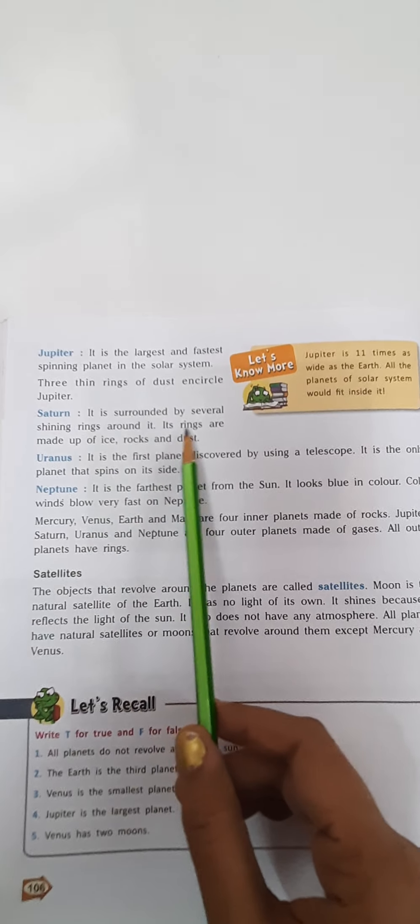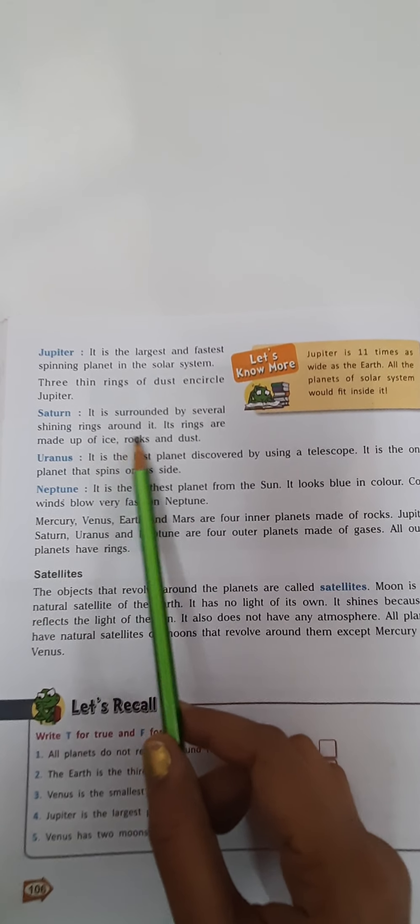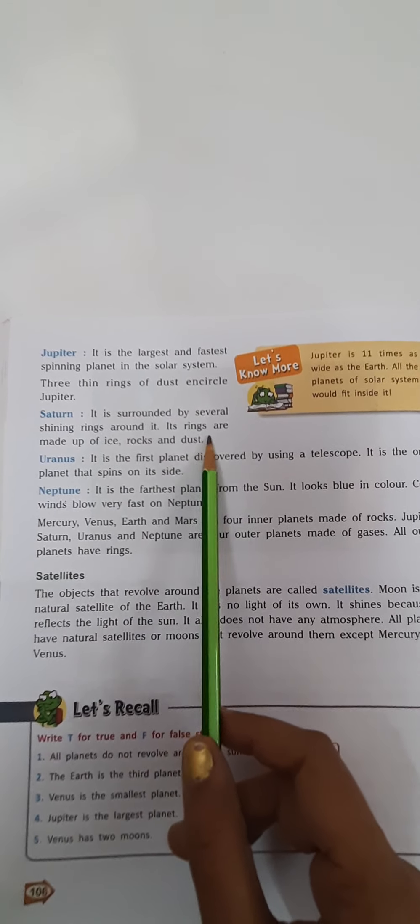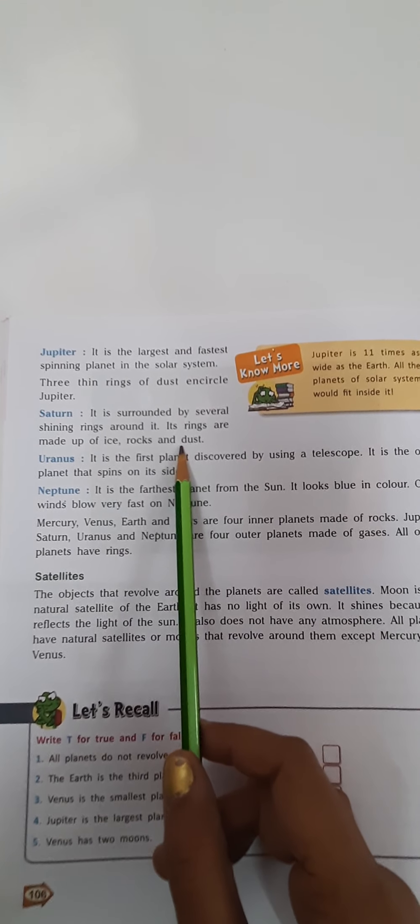Next is Saturn. It is surrounded by several shining rings around it. Its rings are made up of ice, rocks, and dust.